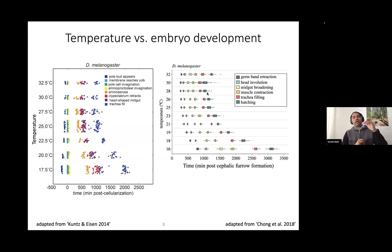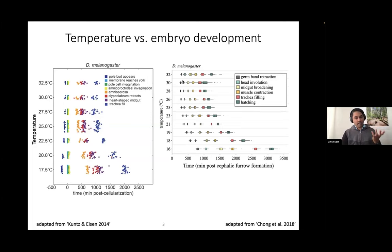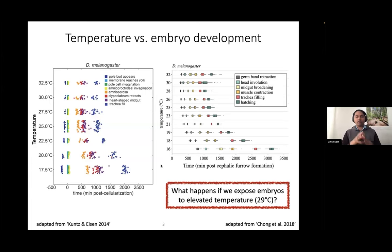Studies have also noticed that if embryos are at temperatures higher than that — like 32 degrees — there are developmental defects; you don't get as many hatching embryos. People have done experiments and seen defects at 32 degrees, but this transition between 28 and 30 or 29 degrees is still a bit of an open question. So I want to ask what happens if we expose embryos to 29 degrees — calling this an elevated temperature, not a high temperature, since higher temperature has already been explored to some extent.